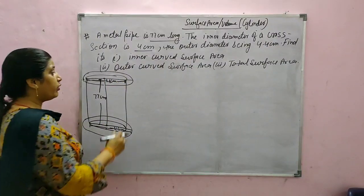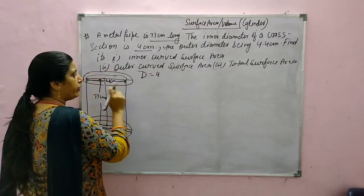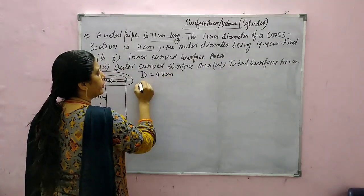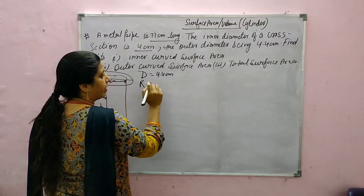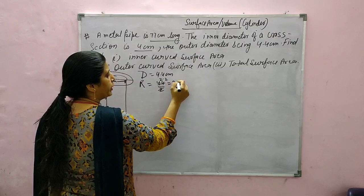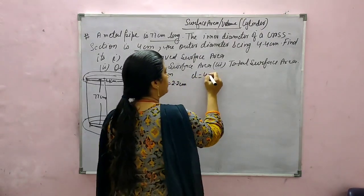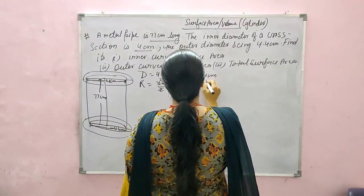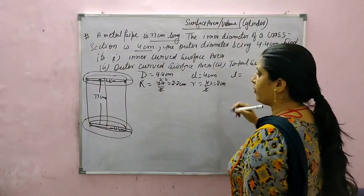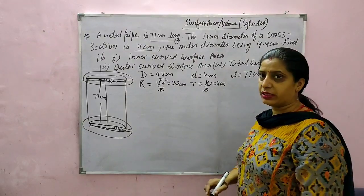First we will find the radii. Capital D (external diameter) is 4.4 cm, therefore capital R (external radius) is 4.4 divided by 2, which equals 2.2 cm. Small d (internal diameter) is 4 cm, so small r (internal radius) is 4 by 2, which equals 2 cm. The length is 77 cm, same for both.